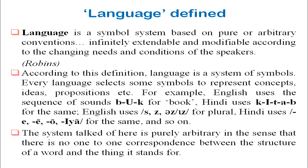Hindi uses different sequences for plural: ladke for boys, kitaben for books, kitabon, and ladkiya for girls. The system is purely arbitrary — there is no one-to-one correspondence between the structure of a word and the thing it stands for. There is no logic as to why a pen should be called 'pen'; it could have been called 'NEP' or 'EPN' — it is simply convention.